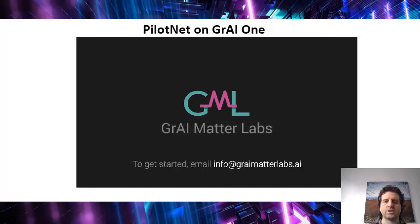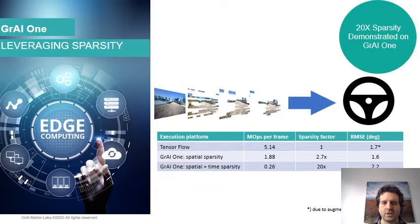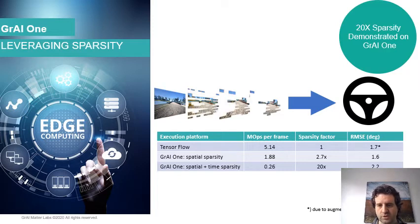So this was explained in a bit more organized way. Let's look then at the results. We run this PilotNet application on TensorFlow first, where we trained it using common tools, and we measured how many operations per frame we needed to do by computing all the synapses. That gave us roughly five million operations.